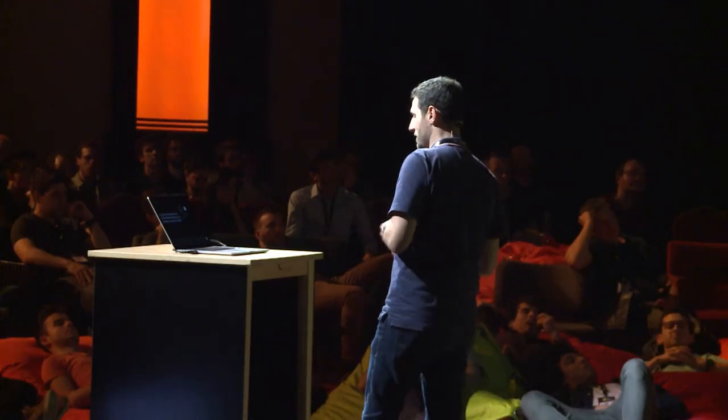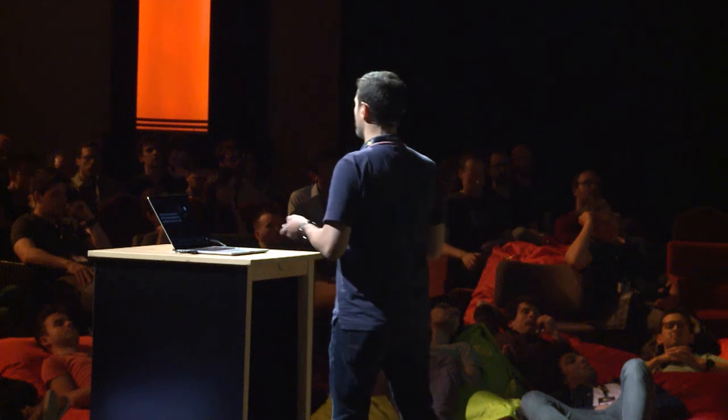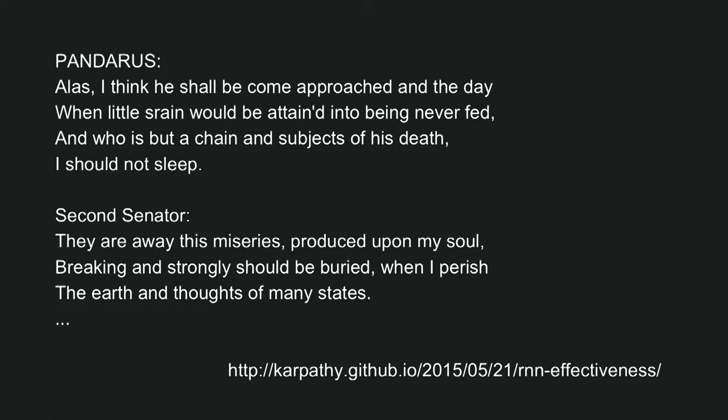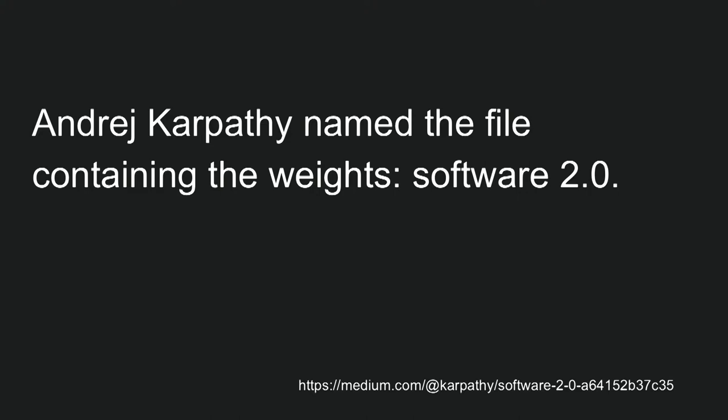Let me take a famous example: the LSTM that loves Shakespeare. It generates a new play from scratch. What we have here is the equation of a recurrent neural network, an LSTM, and a CSV file with the weights. If we combine this equation and the weights — the knowledge — we get a Shakespeare. This example is from Andrej Karpathy. Andre Karpathy named the file containing the weights the software 2.0.